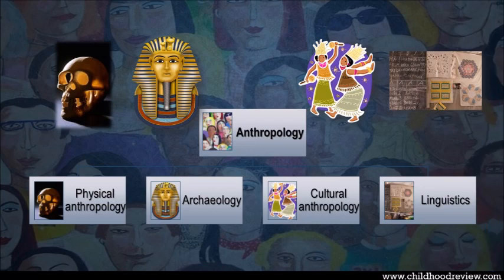There are four major subfields in anthropology. Even though there is no sharp division among these subfields — and they can overlap at times because they share similar goals to explore biology, society, and culture in time and space — you can understand the difference through major research directions and methodology used in these fields. These fields are physical anthropology, archaeology, cultural anthropology, and linguistics. In the next slide, we will have a brief introduction to these subfields.